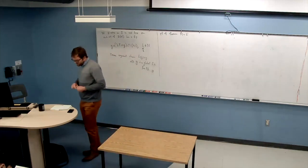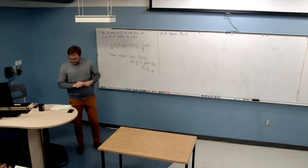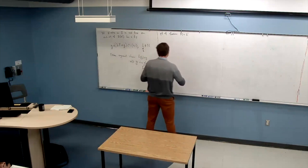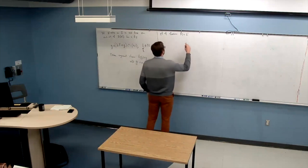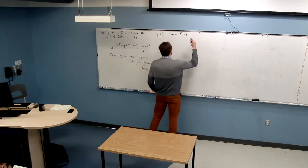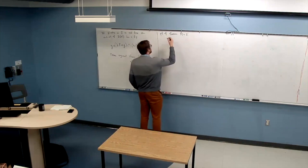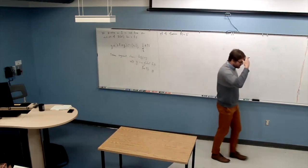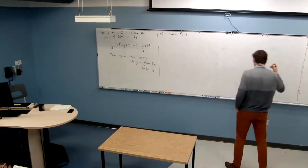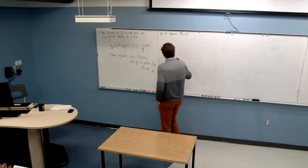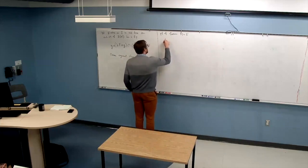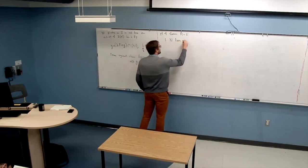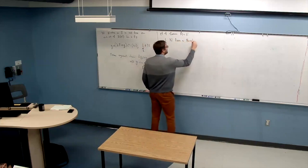One remark: one can even weaken C² to C¹ plus bounded variation, meaning the first derivative simply has to be a function of bounded variation. That's already enough — it's implied by being C² because it's weaker.